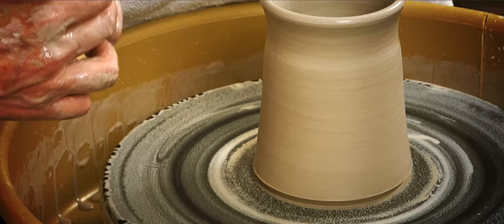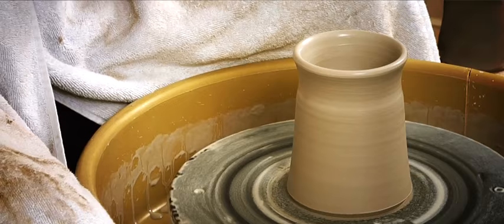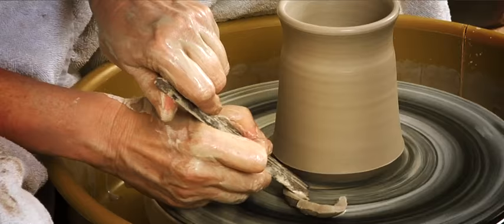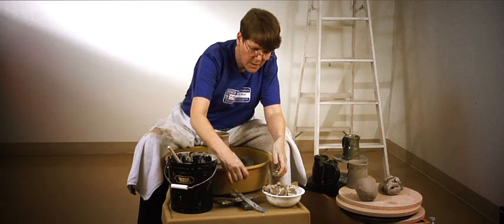But first I need to do an undercut. For just a regular mug that might be enough. But since I'm going to be carving down into it, I really need to make quite a deep undercut. So that when the wire comes down, which you'll see in a moment, it doesn't hit the bat.